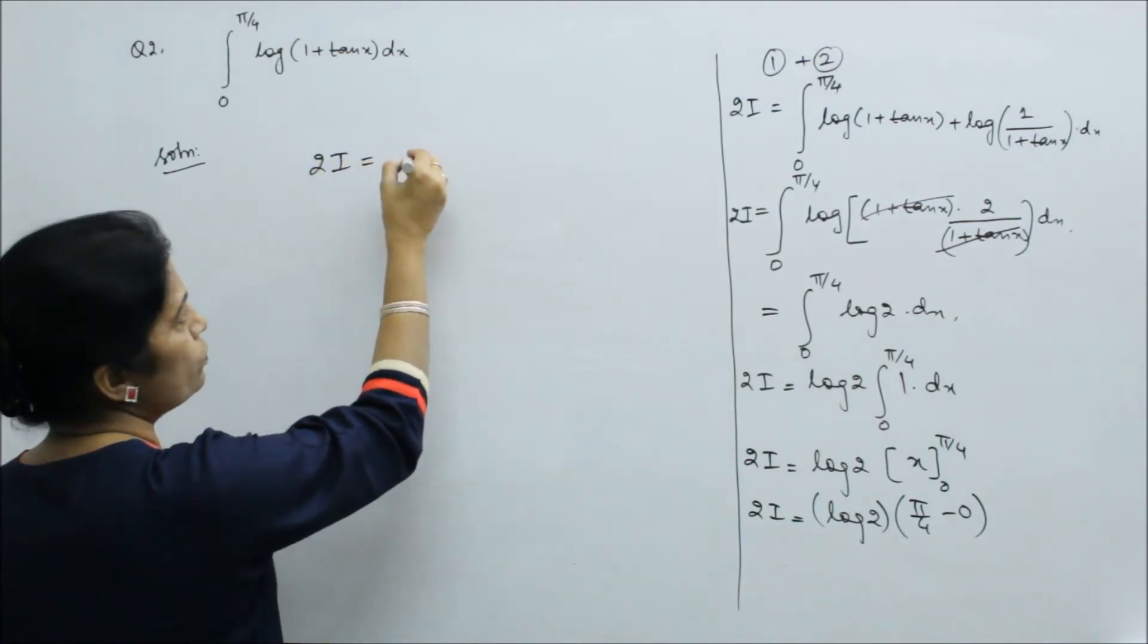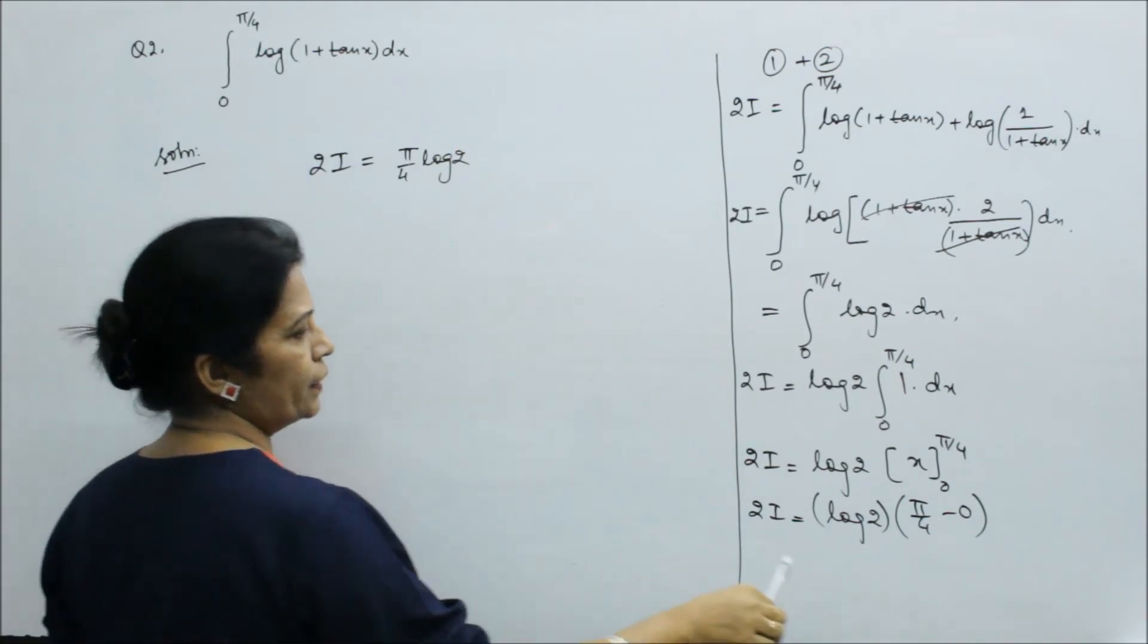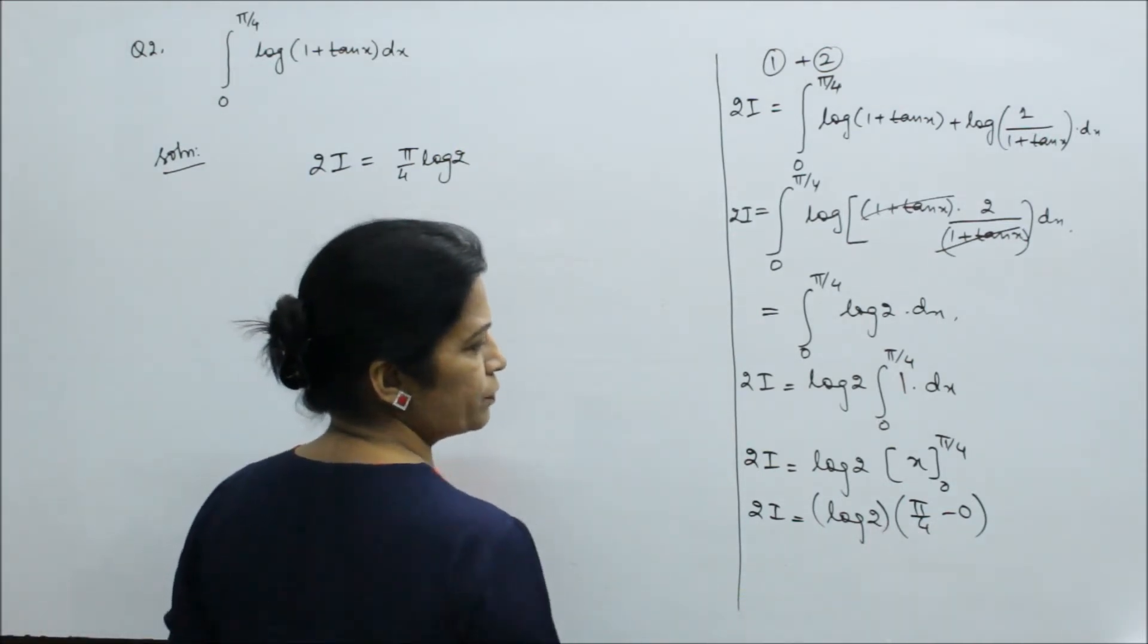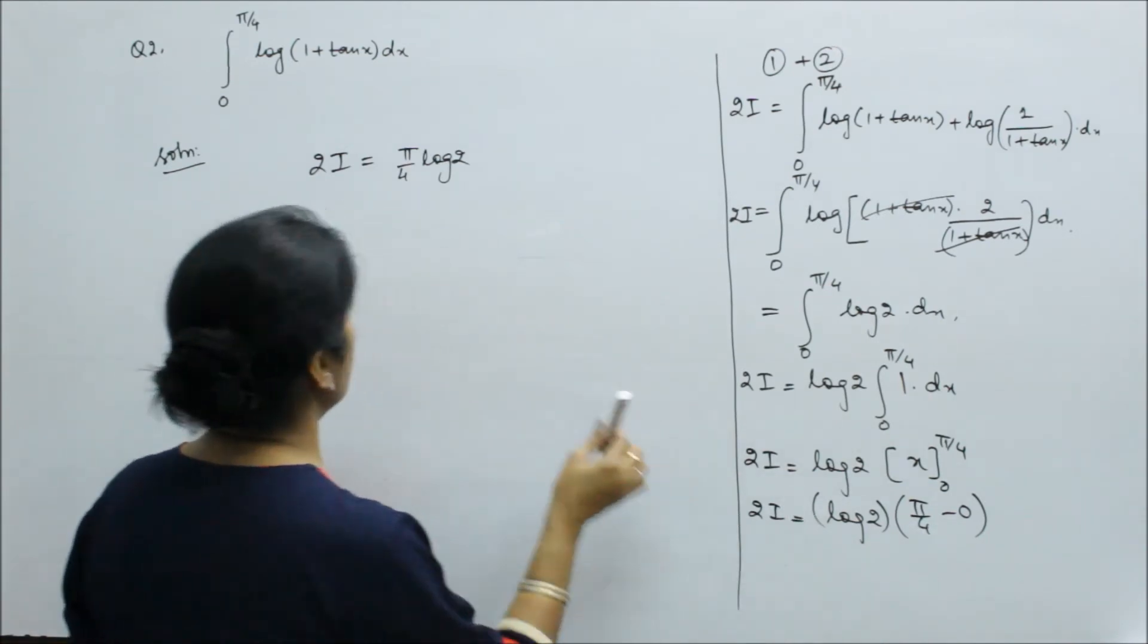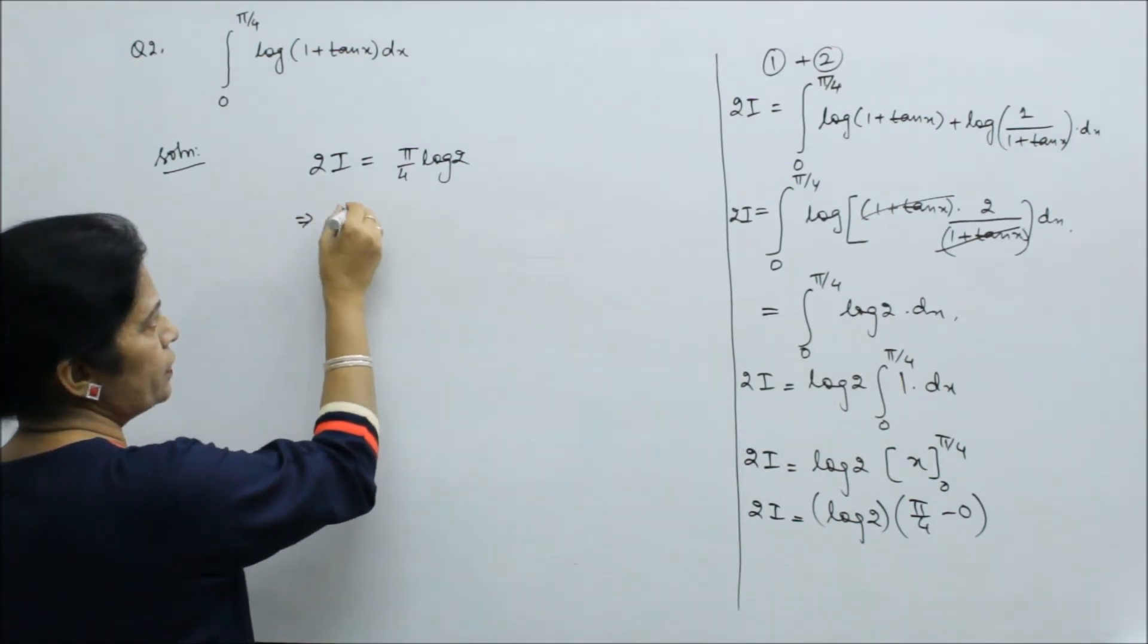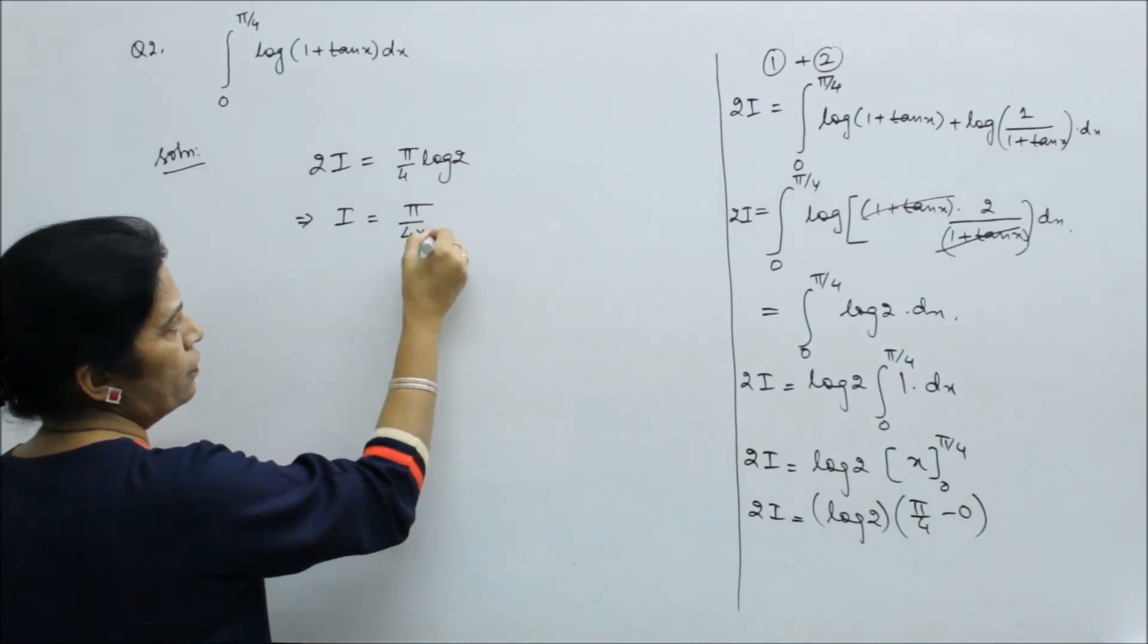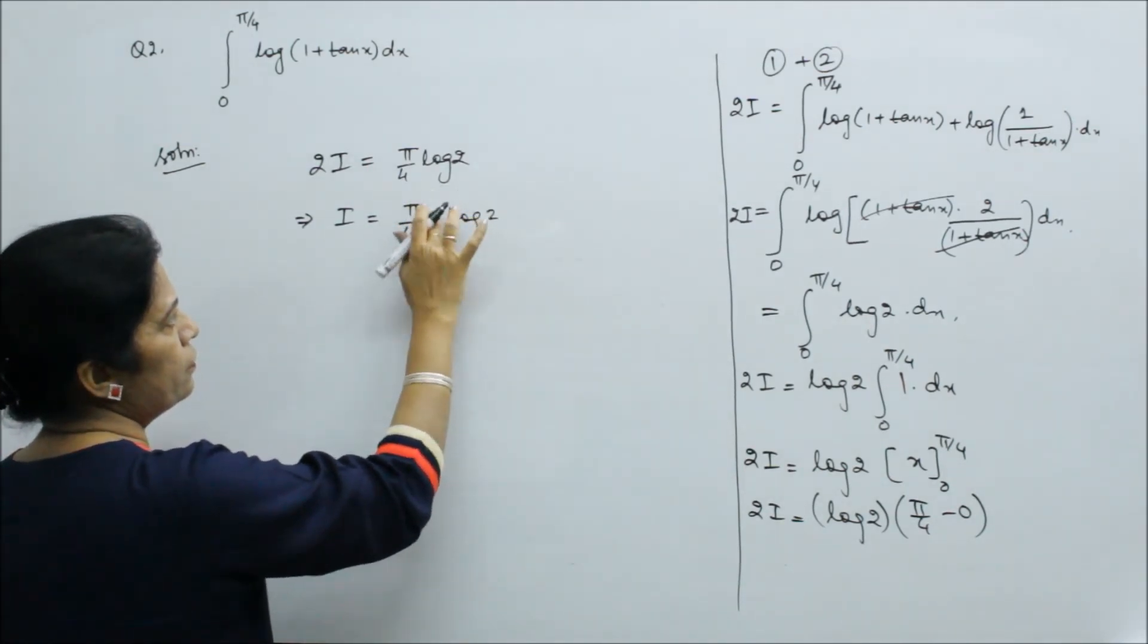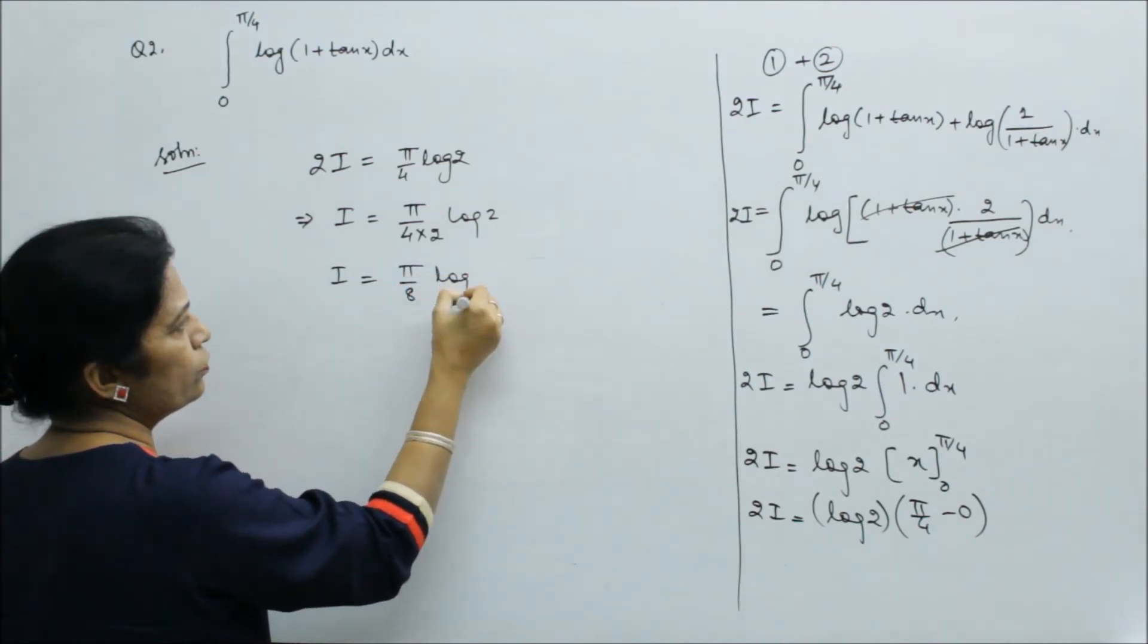So 2I is equal to π by 4 into log 2. So log 2 is separate, π by 4 is separate. So the integral is when 2 comes to this side, it is π upon 8 log 2.